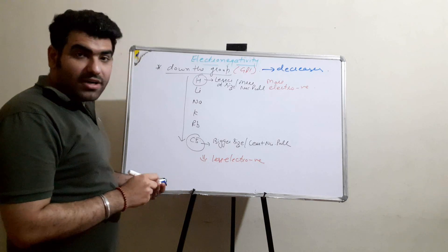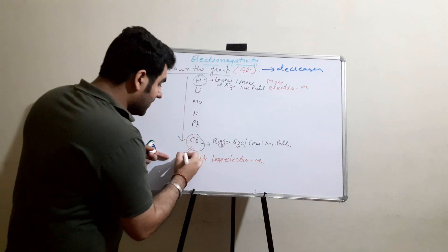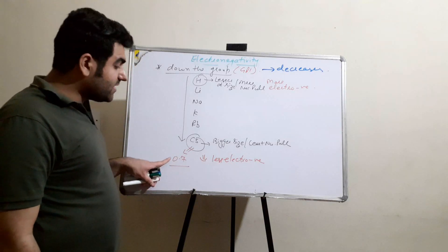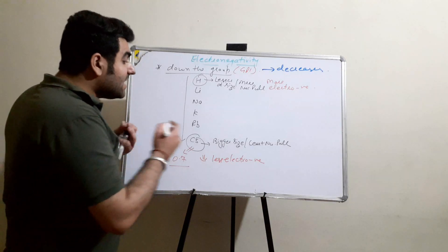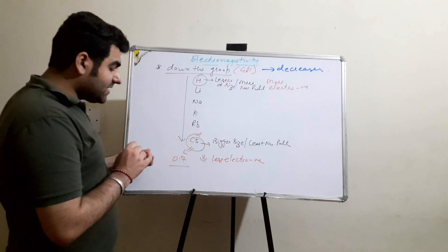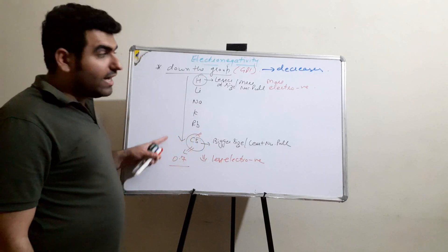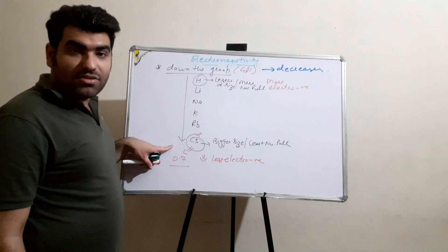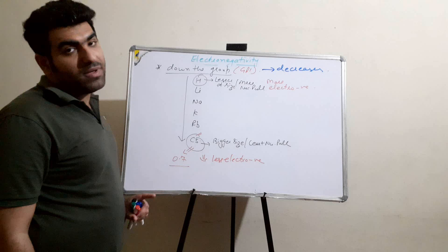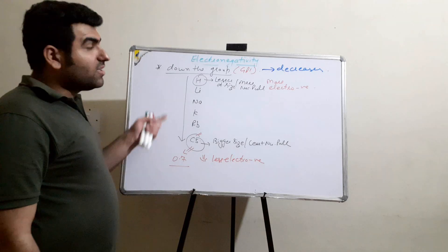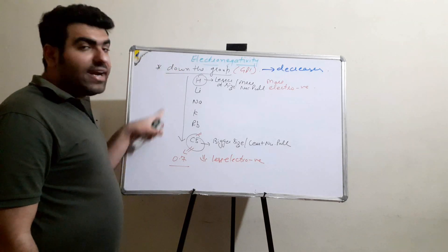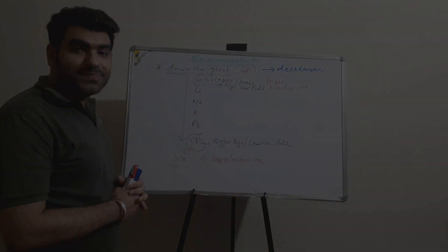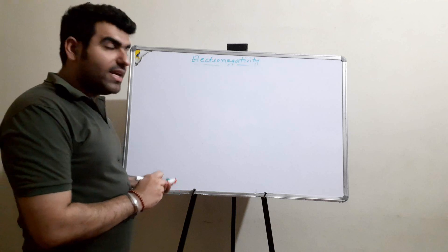The value of electronegativity for cesium is 0.7, and cesium is the least electronegative element in the entire periodic table. This is how the electronegativity trend works down the group. Now we will see its trend along the period.